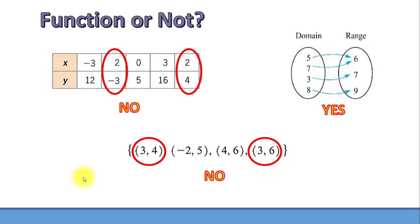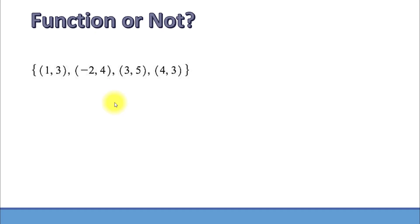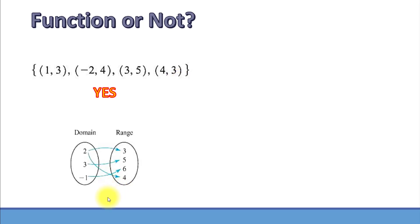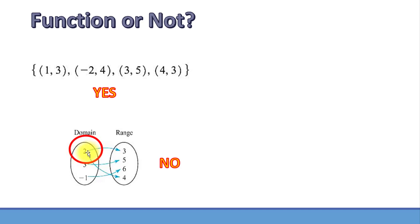We're going to look at a few more examples. Is this a function? Yes, it is — all inputs have only one corresponding output. How about this one? This time it's not a function. Notice that input 2 has two corresponding outputs: 3 and 4.